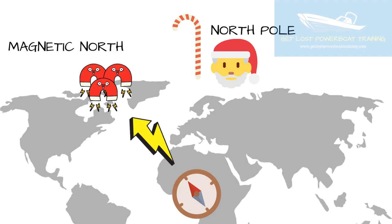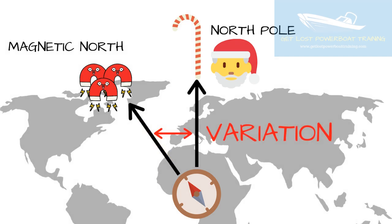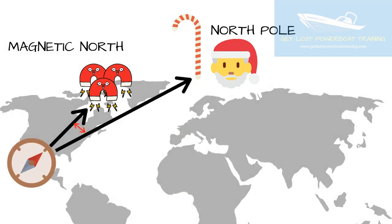However, our charts are all orientated to true north. The resulting angle between magnetic north and true north is what we call variation, and it will change according to where you are on the planet.